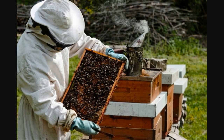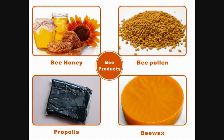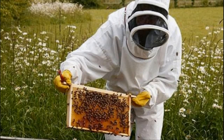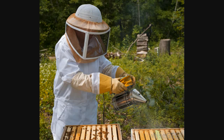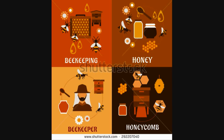Beekeeping, also known as apiculture, involves the rearing of honey bees artificially to gain many products from them. The four main species of honey bees found in India are Apis dorsata, Apis florea, Apis indica, and Apis mellifera. Apis indica is the most suitable species found in domestic areas and is bred on a larger scale. Beekeeping requires many equipment as it is cultured artificially, and one must be aware of bee activities and all related information.